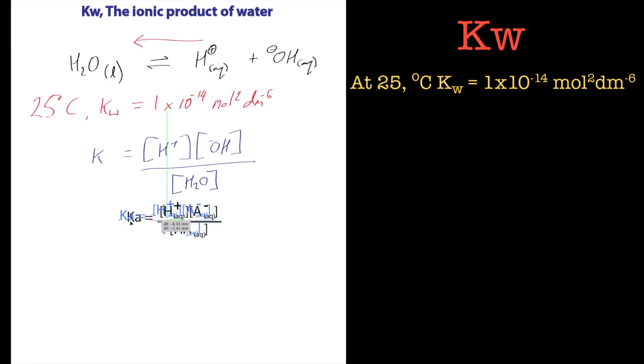So we've got a special case for water now, basically. It's a bit like Ka, and what we have to do is rearrange the equation slightly. What we do is rearrange the equation to this. Basically, all I've done is multiply both sides by HA, and we've got HA up here, and this one will cancel out.